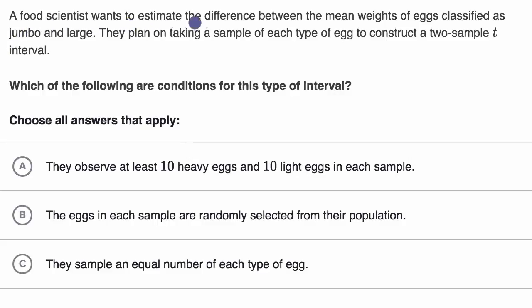A food scientist wants to estimate the difference between the mean weights of eggs classified as jumbo and large. They plan on taking a sample of each type of egg to construct a two-sample T interval. Which of the following are conditions for this type of interval?